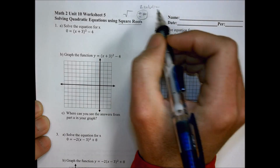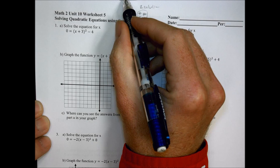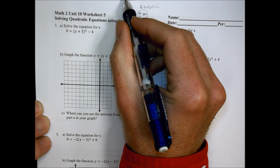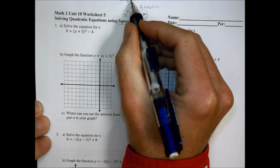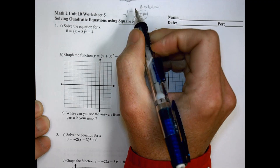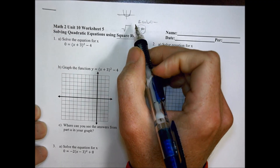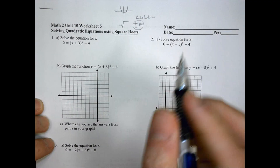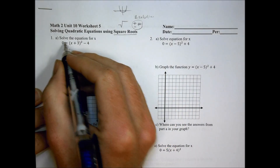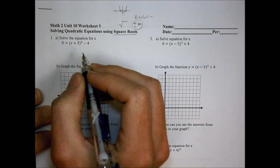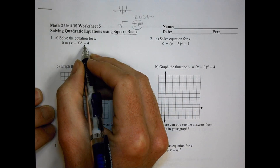That makes sense when we talk about graphing. If I'm graphing a parabola and looking for x-intercepts, I can have two places where that parabola crosses the x-axis, which is how you end up with two different answers. So here we go — solve the equation for x.